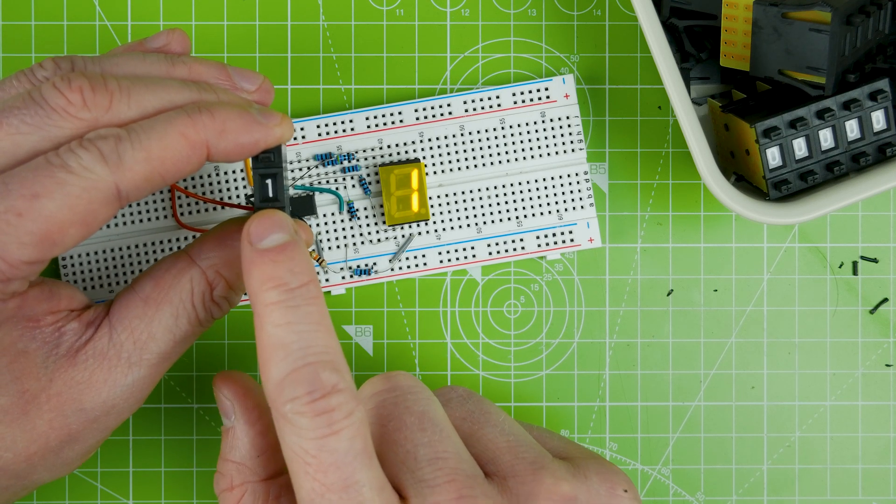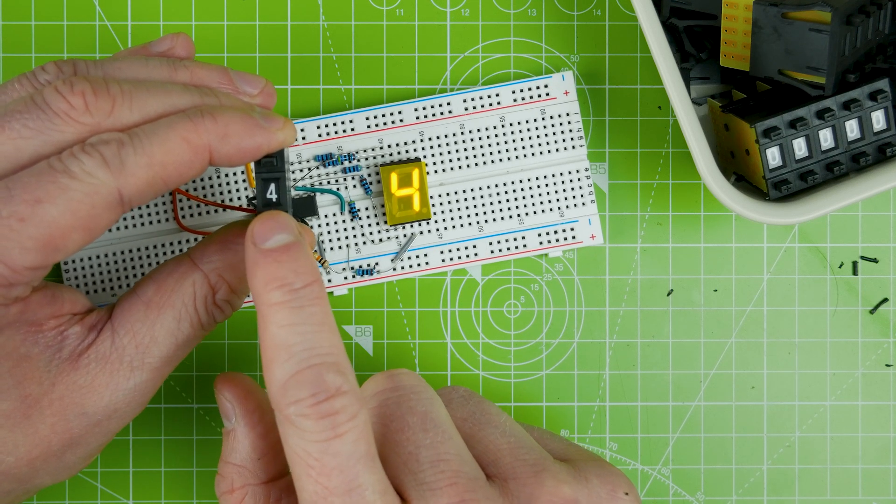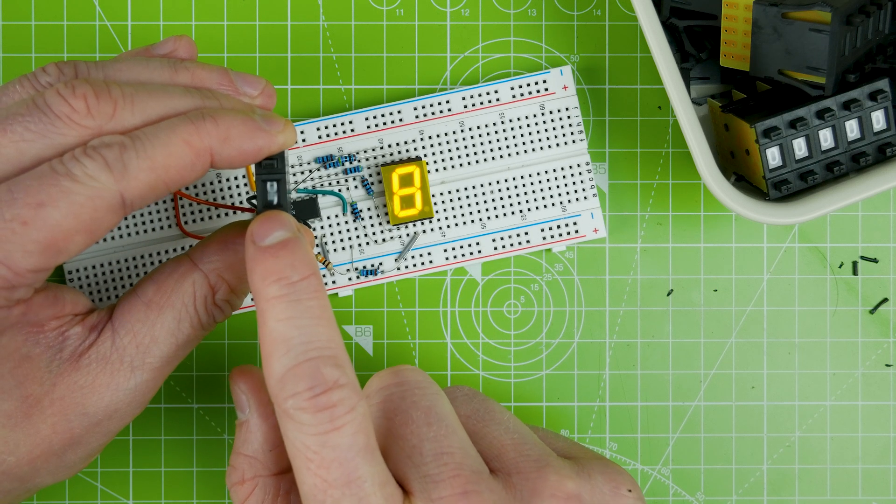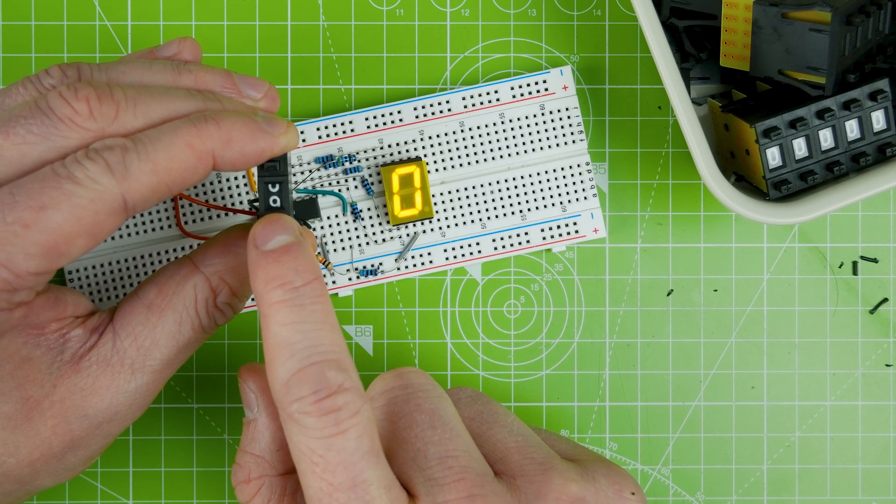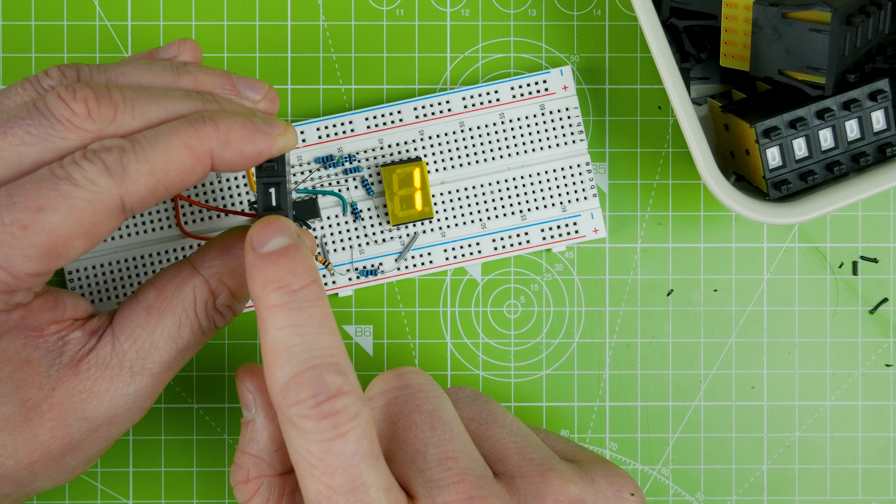So this 4511 takes a BCD input, which means it is now showing me what's on my pushwheel switch.